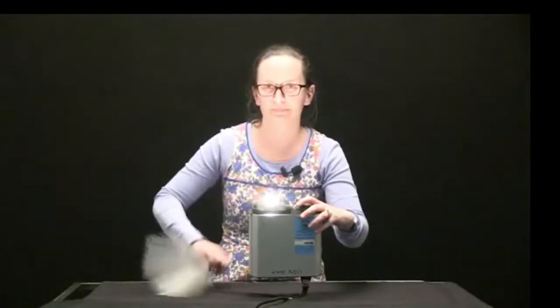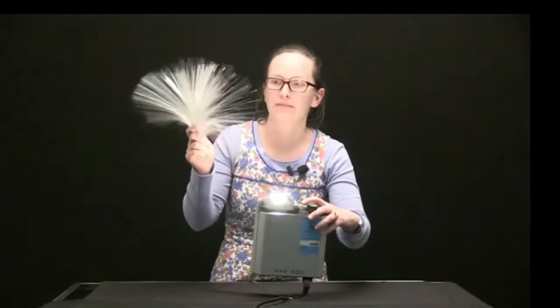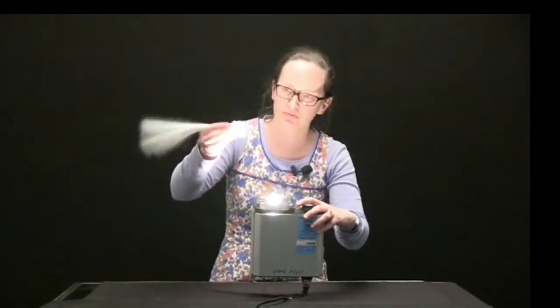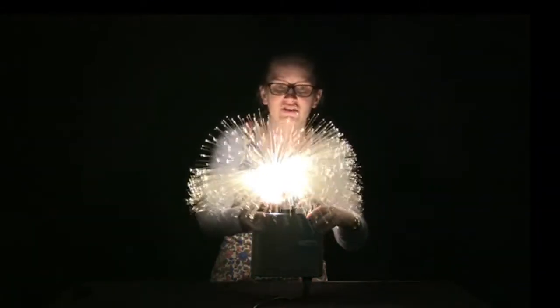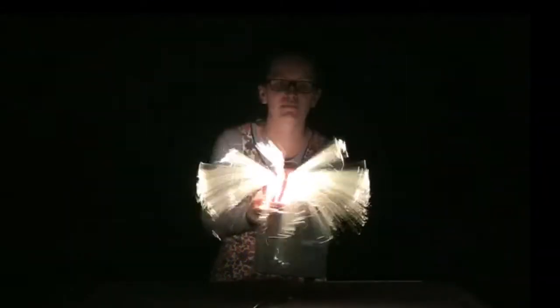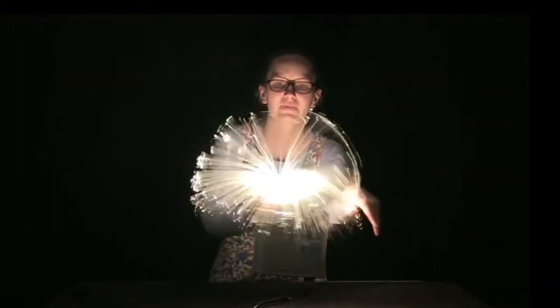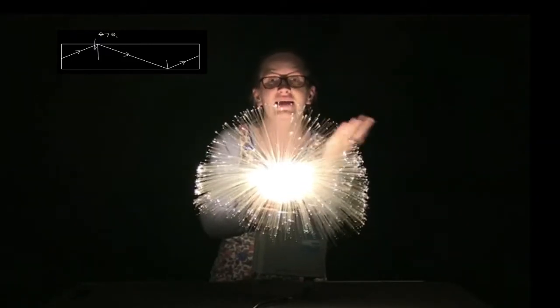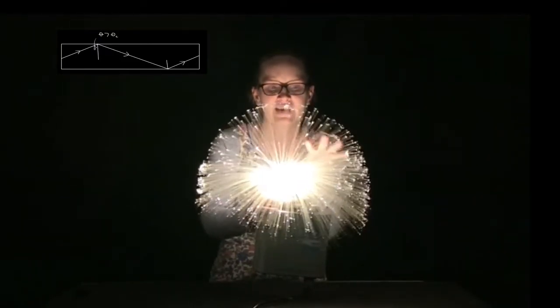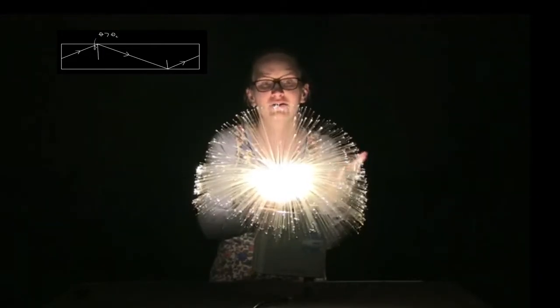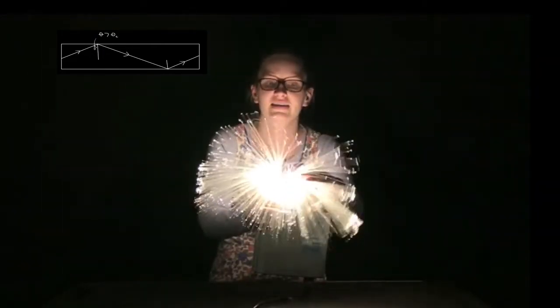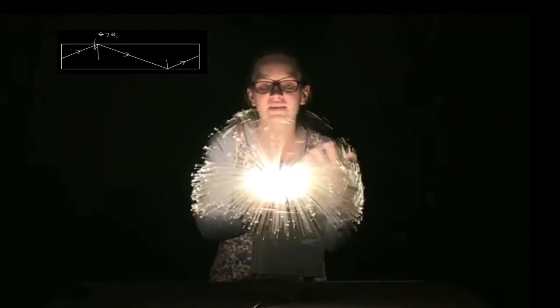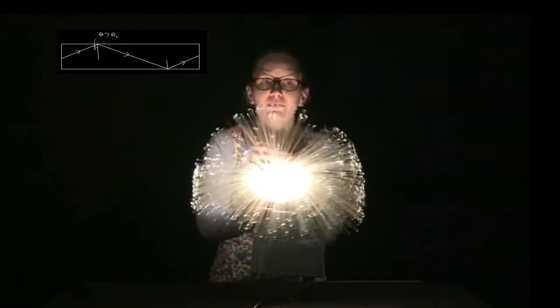So what we have here is a light source and some fiber optic cables. Now these might look a bit familiar to you if you have Christmas decorations like this. So we can put these fiber optic cables on our light source. And you can see the little pinpricks of light at the end of the fiber optic cables. This is because most of the light travels all the length along the fiber optic cables, as it can't escape because it hits the edges of the cable at an angle greater than the critical angle for the cable, until it gets to the end, at which point the light can move out of the cable. So this is how we send signals along fiber optic cables.